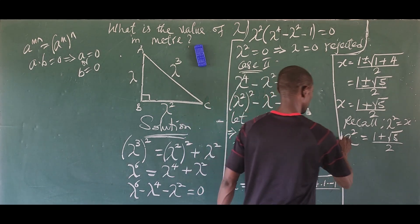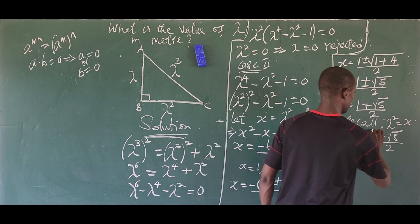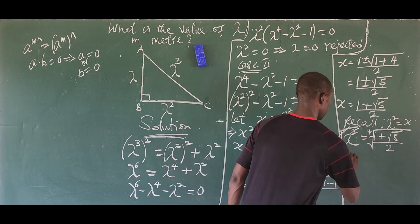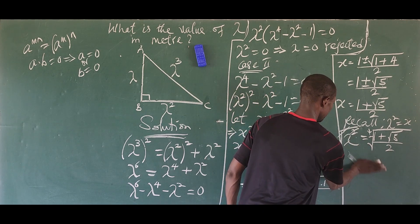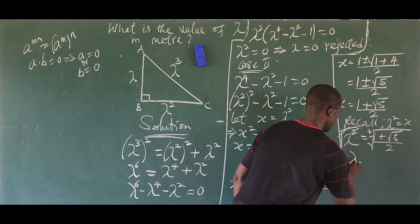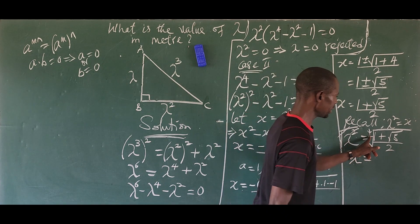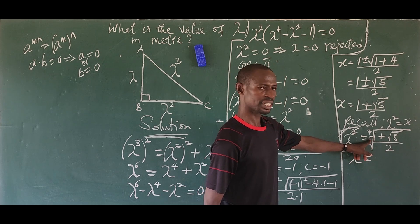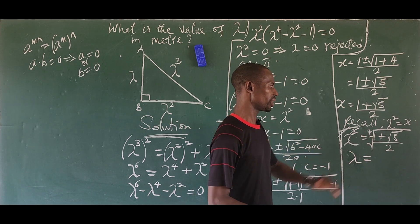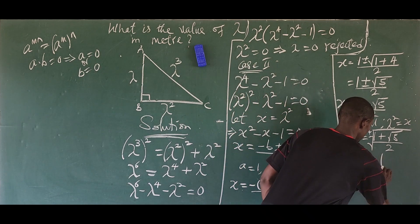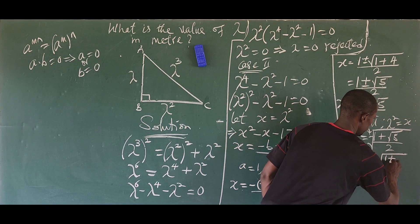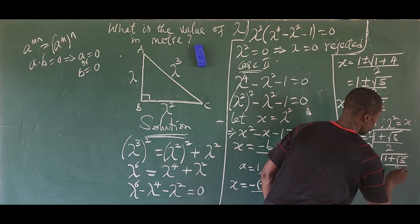Recalling our substitution, lambda squared equals x, so lambda squared equals one plus the square root of five, all over two. Taking the square root of both sides gives plus or minus a result — we discard the negative root since length must be positive. Therefore, lambda equals the square root of one plus the square root of five, all over two.